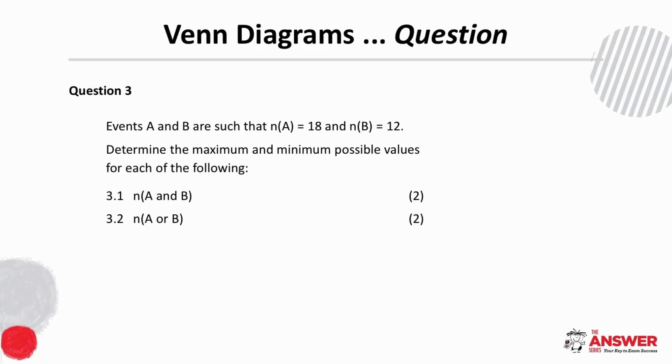In question 3 we are given information about events A and B and we are asked to determine the maximum and minimum possible values for each of the following.